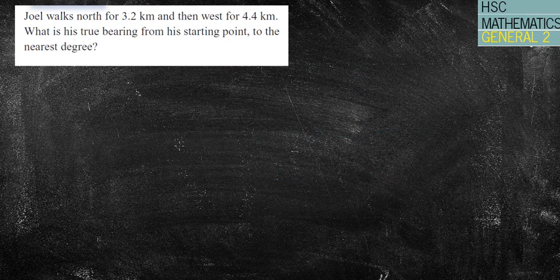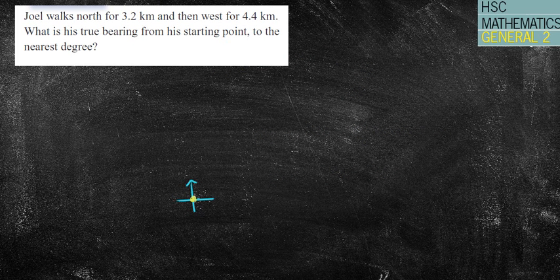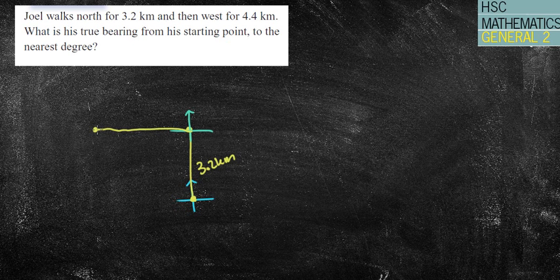Next one. Joel walks north for 3.2 kilometers and then west for 4.4. What is his true bearing from his starting point? So they haven't given us anything. I do know that I'm walking north. So I'm going to do my starting point. That's my north, south, east, west bearing. I'm going to start here and he walks exactly north, so due north up here for 3.2 kilometers. He then, I'm going to draw another little bearing line on here, just so I've got my true north bearing. Then walks west for 4.4 kilometers.